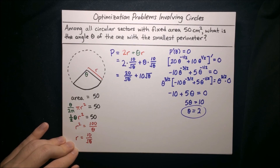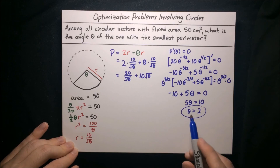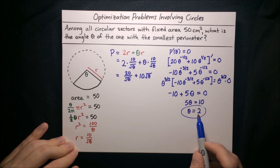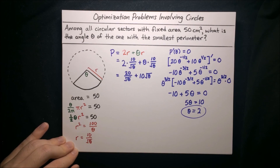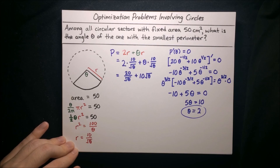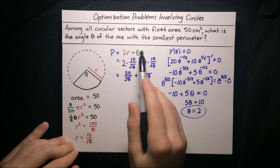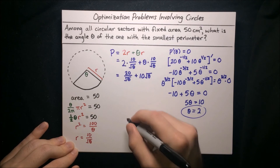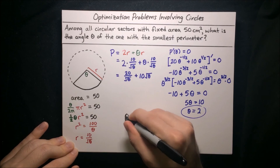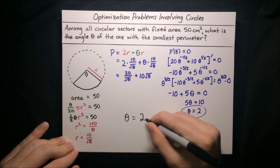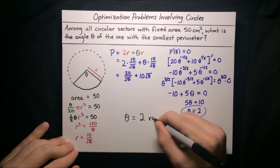To confirm this is a minimum of the perimeter function, you should check that the second derivative is positive — I'll leave that to you, but it will work out. That's what we wanted to find: the angle theta of the sector with the smallest perimeter. So our final answer is theta equals 2 radians.